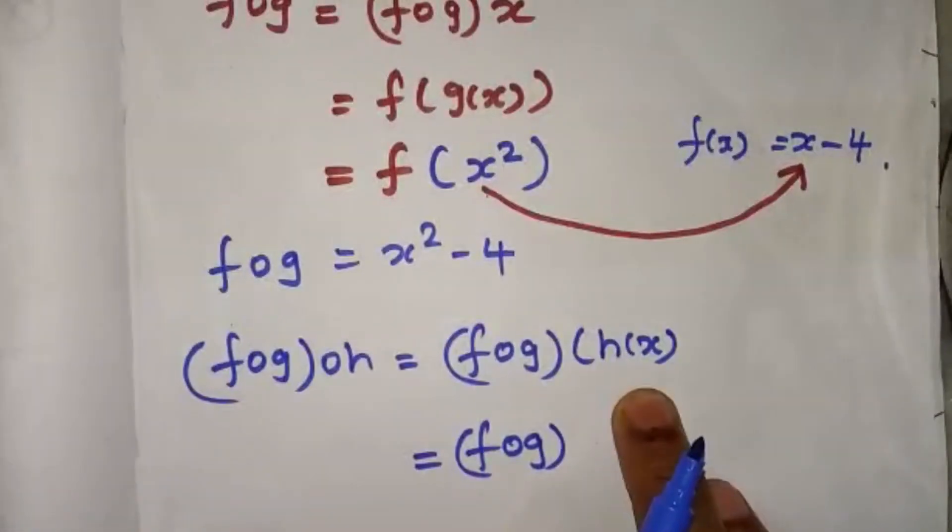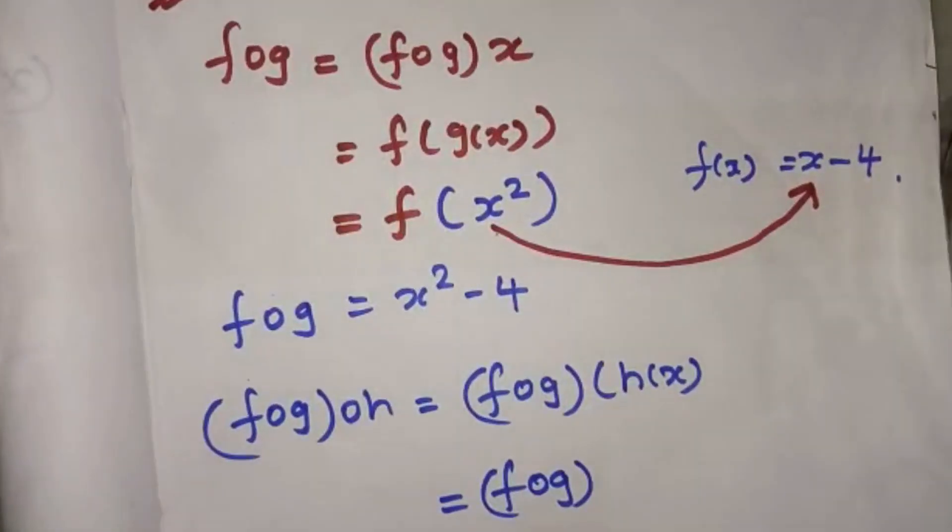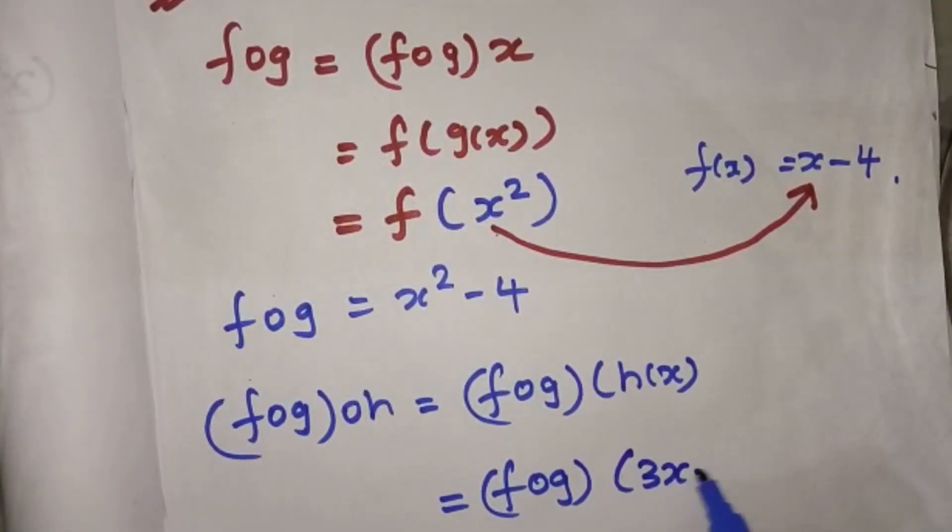Now h of x of function is 3x minus 5. That is, this is 3x minus 5.